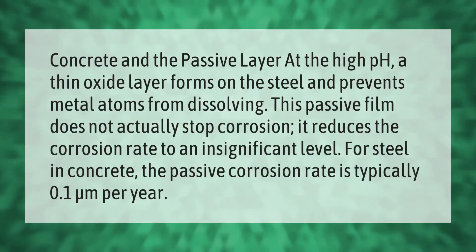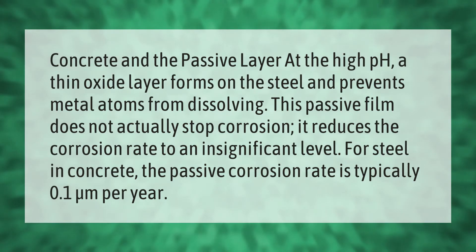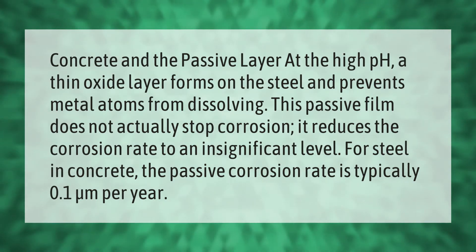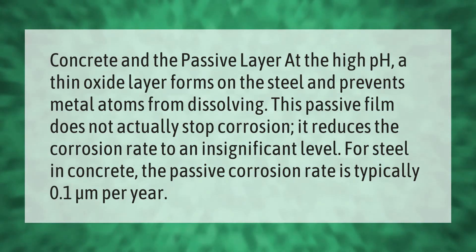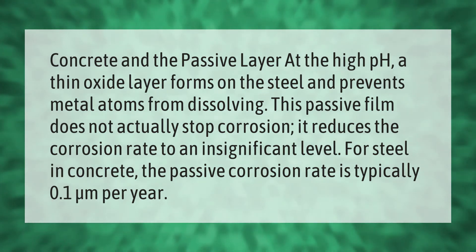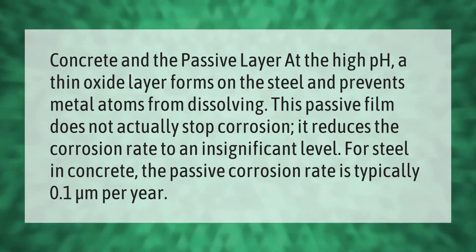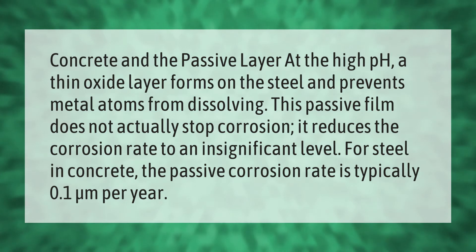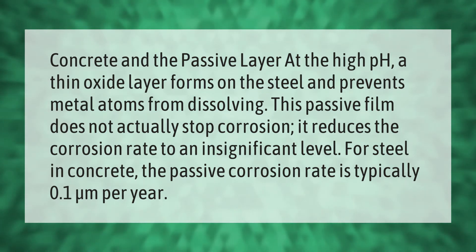In concrete, at the high pH, a thin oxide layer forms on the steel and prevents metal atoms from dissolving. This passive film does not actually stop corrosion — it reduces the corrosion rate to an insignificant level. For steel in concrete, the passive corrosion rate is typically 0.1 micrometers per year.